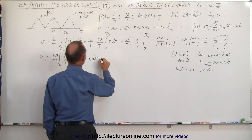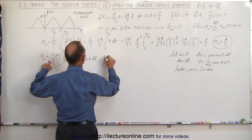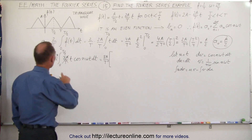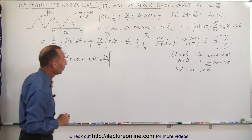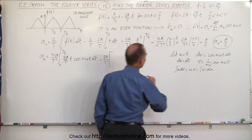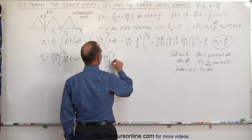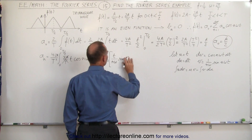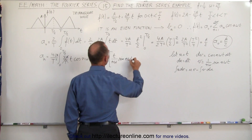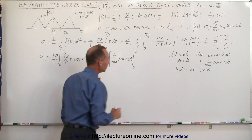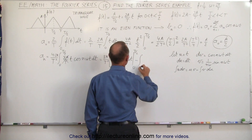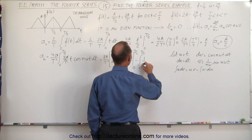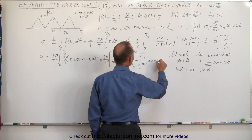Applying that here, we still have 8A over T squared. We multiply that times u times v — with limits to implement in a moment — so u times v gives us t over nω times sin(nωt), evaluated from 0 to T/2. Then minus the integral from 0 to T/2 of v du, which is 1/(nω) times sin(nωt) dt.